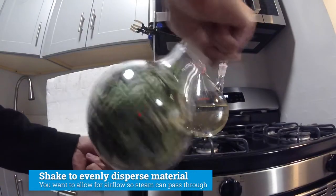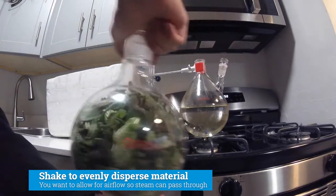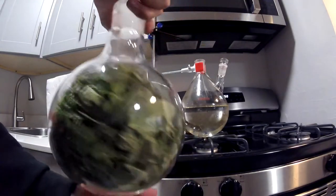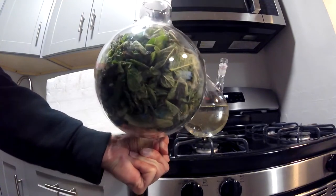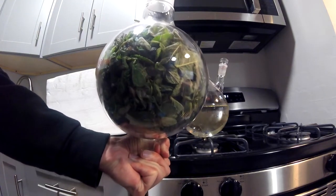It is important to ensure that the plant material is evenly distributed so that steam can pass through it. Next, we'll attach the condenser, the separatory funnel, and the rubber tubing.